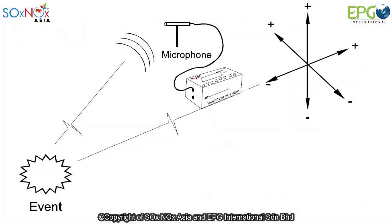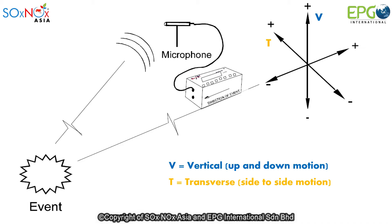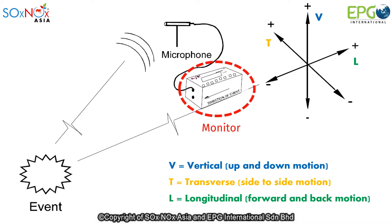Tri-axial geophone indicates that the geophone can detect ground movements in three axes at once. The three axes are the vertical axis, transverse axis, and longitudinal axis. The ground vibration data from each axis will then be displayed onto the monitor here, and the data can then be used for further analysis.